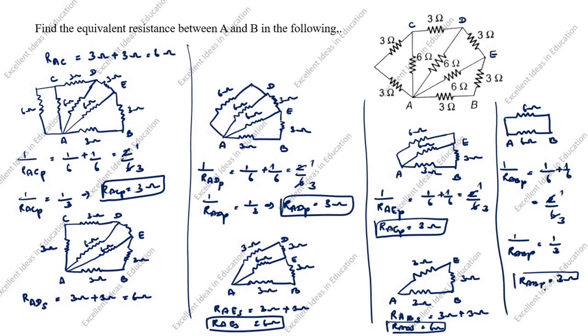So the equivalent resistance between A and B is 3 ohm. This is the answer. Thanks for watching this video.